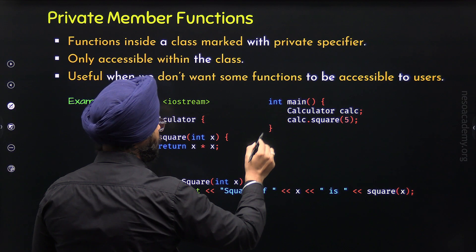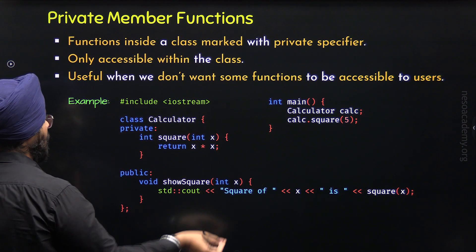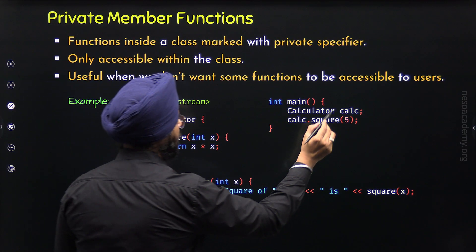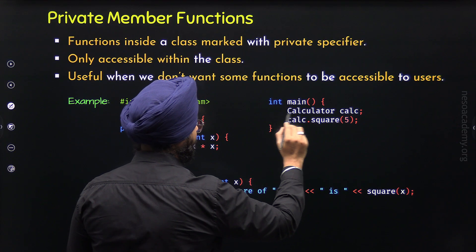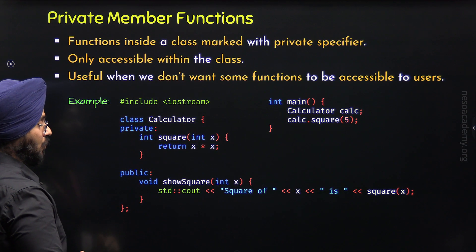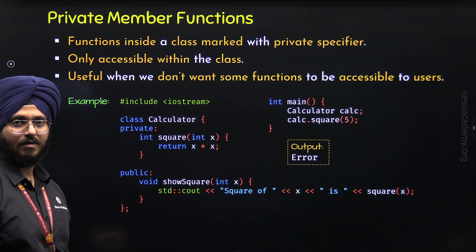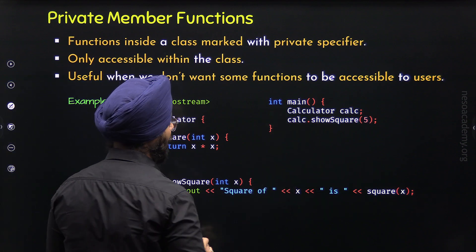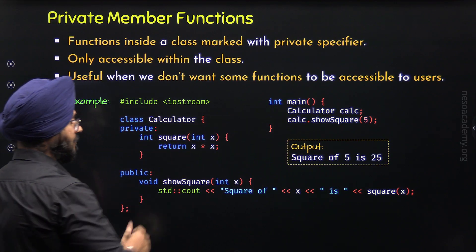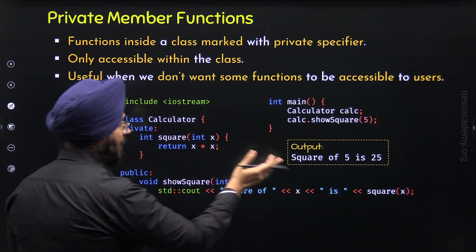Here is the main function — you can think of this as the outside world, meaning something that is outside the class. We have an object calc of type calculator. Through this object, I am trying to call the square function, but we cannot do this, so the compiler will give an error. However, we can call show_square and pass the value 5 to it. We will get the output: square of 5 is 25, which is correct.